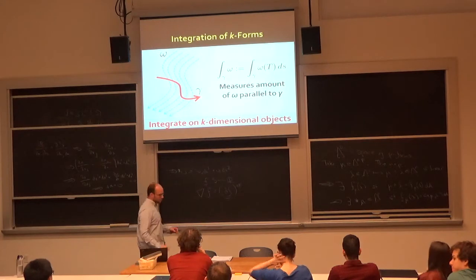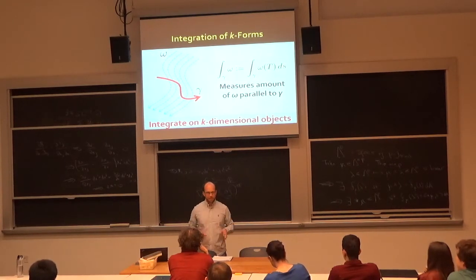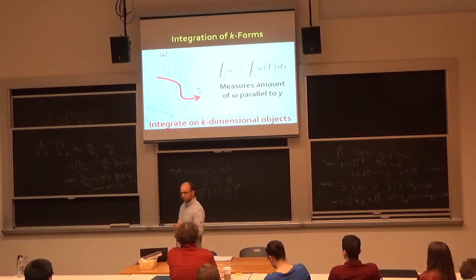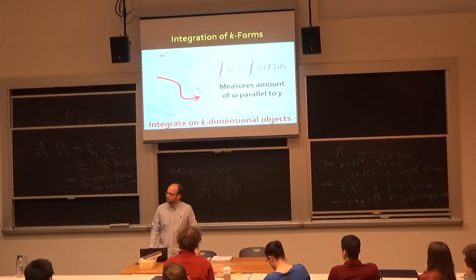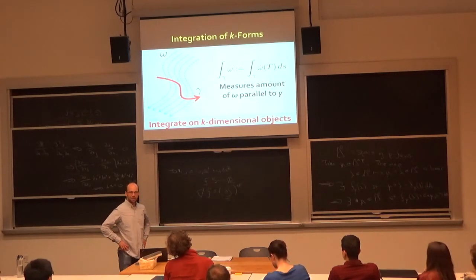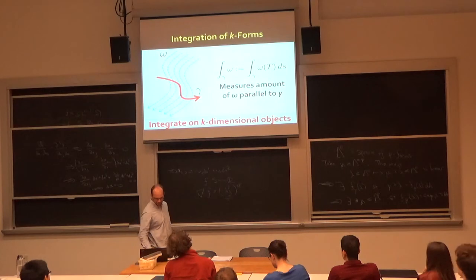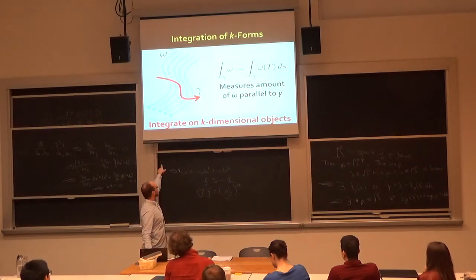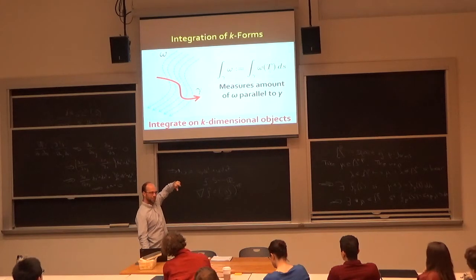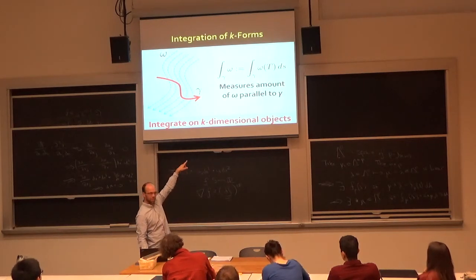Two-forms on a sphere are like little flux sensors — that should remind you of a surface integral measuring total flux. Differential forms give a very careful way of defining surface integrals. We can integrate a k-form over a k-dimensional manifold: the integral of a one-form along a curve is just the dot product of your field with the tangent, integrated — omega(T) is the dot product between your field and T. Stokes' theorem says the integral of d-omega over a region equals the integral of omega over the boundary.